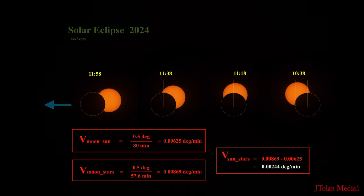So now we can do the calculations. The velocity of the moon relative to the sun is 0.5 degrees per 80 minutes, which comes out to about 0.00625 degrees per minute. From the previous work, velocity of the moon relative to the stars is 0.00869 degrees per minute. Now we can calculate the velocity of the sun relative to the stars is 0.00244 degrees per minute.